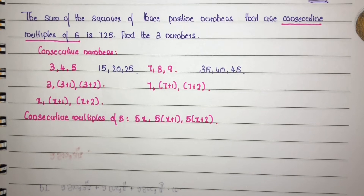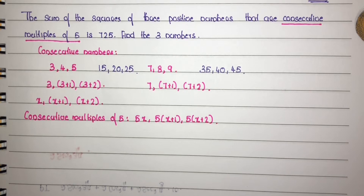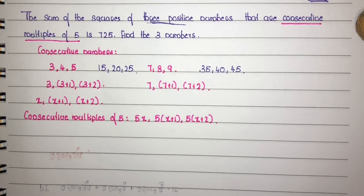Generally we can say consecutive multiples of 5 are 5x, 5x plus 1, and 5x plus 2. Now consider the question: the sum of the squares of 3 positive numbers that are consecutive multiples of 5 is 725. The 3 positive numbers are 5x, 5x plus 1, and 5x plus 2.